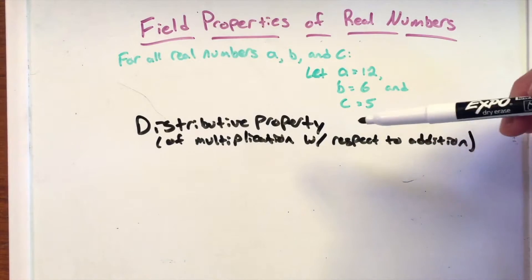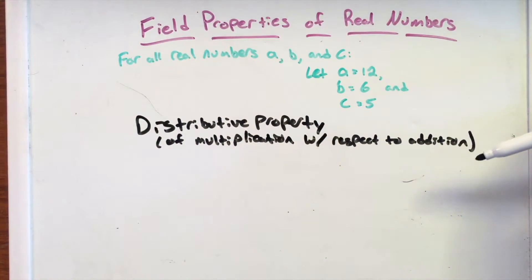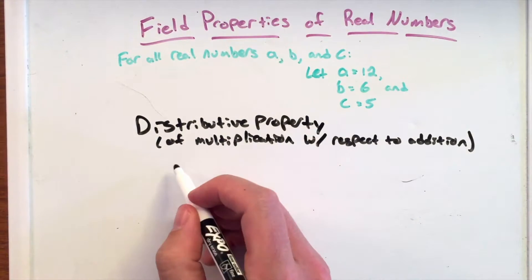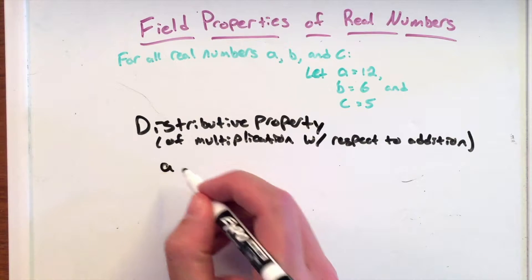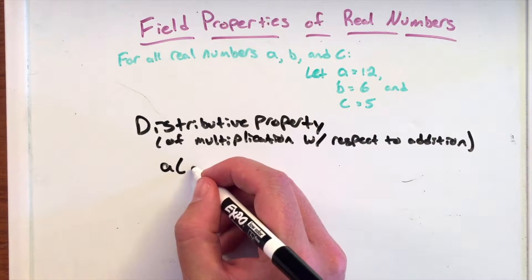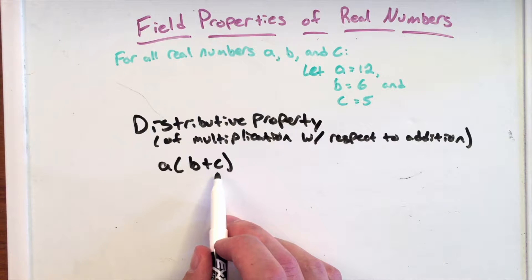In this video, we're going to talk about the distributive property of multiplication with respect to addition. If we're given the distributive property, which we talked about briefly in a previous video, A times B plus C, our order of operations says that B plus C has to happen first.